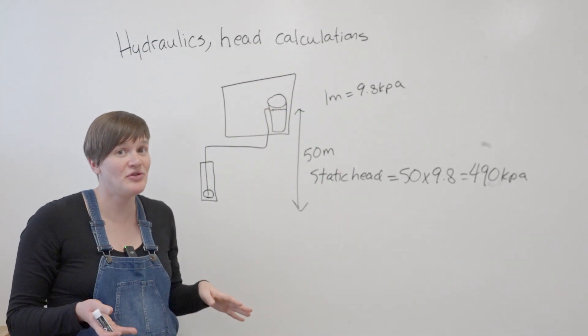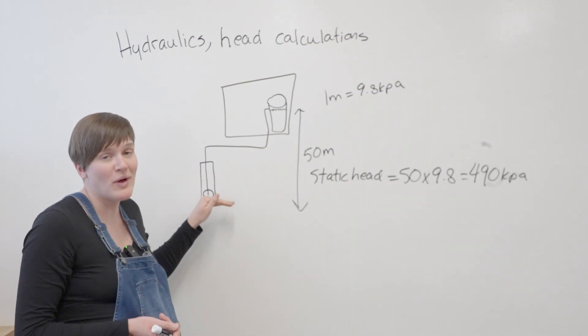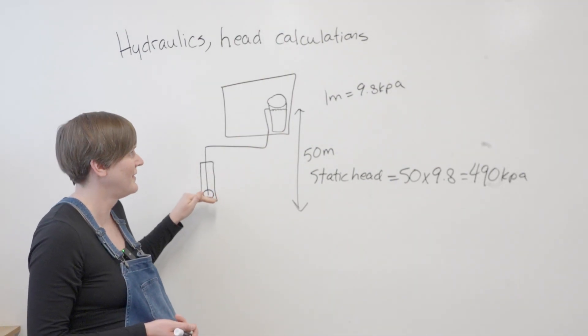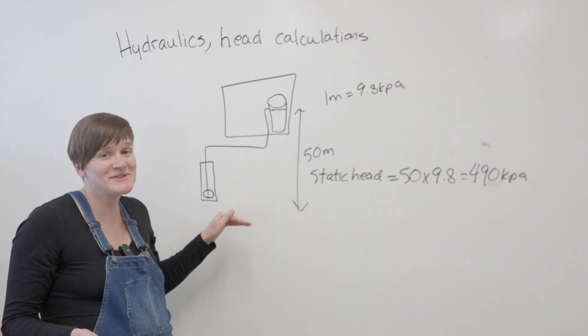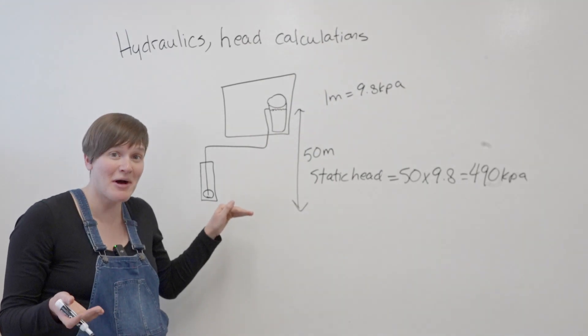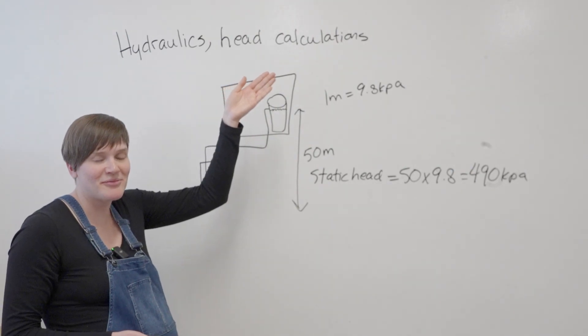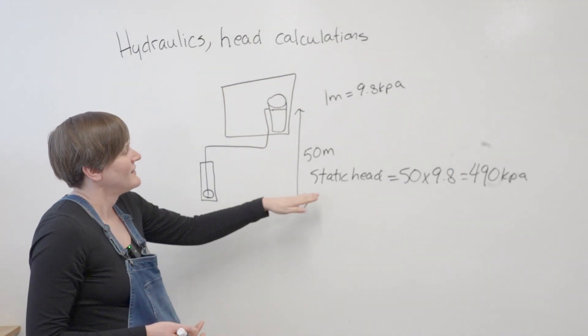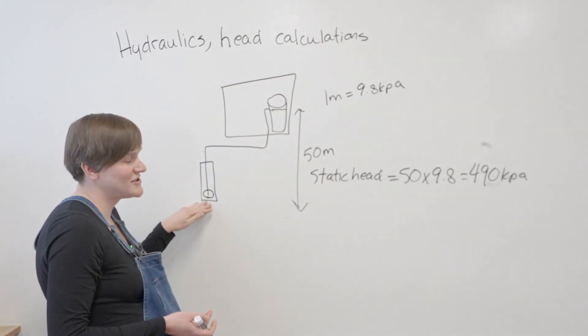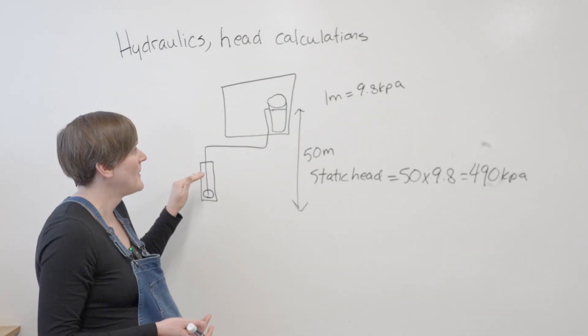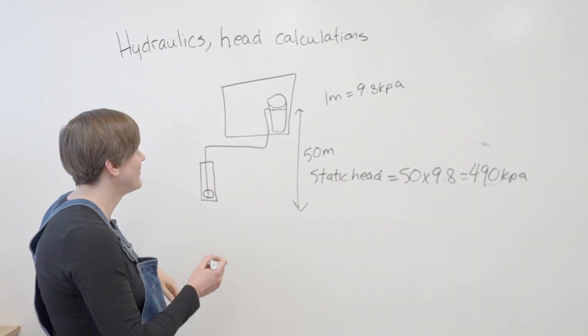And this is something that engineers do when they're figuring out what well pump can we put in this well. Every system is going to have a slightly different pump depending on how deep their well is and how high they have to pump the water to. So that's the static head component. Also when we're selecting a pump, we have to think about friction head.